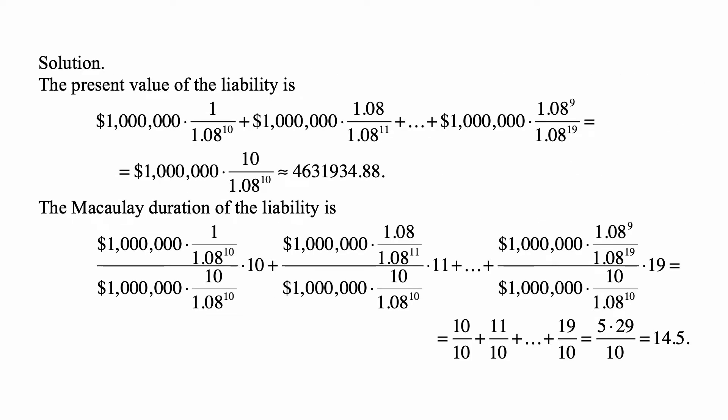Well, the present value of the liability is $1 million, discounted at 8% from the time of payment, which is 10 years from now, plus $1 million, increased by 8%, discounted by 8% over 11 years, and so on until $1 million is increased 9 times and paid at time 19, and discounted over 19 years.